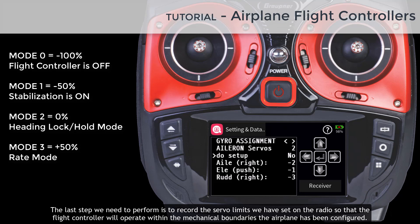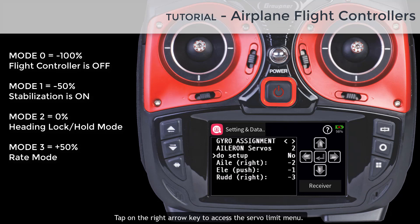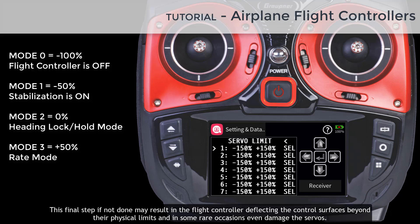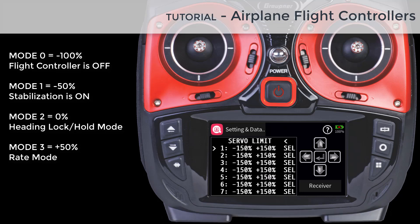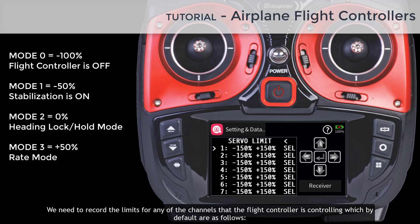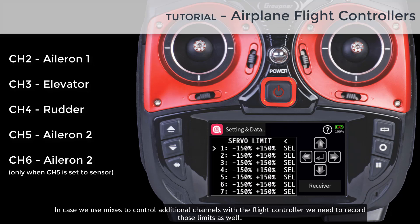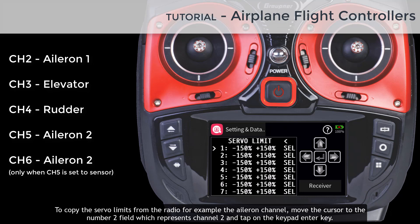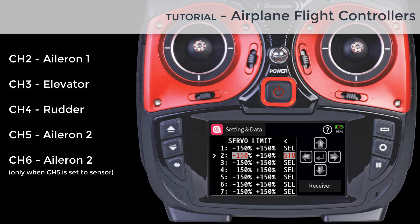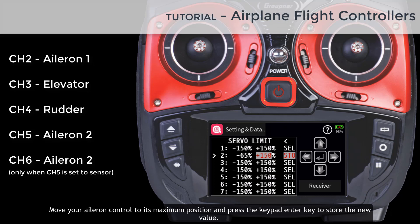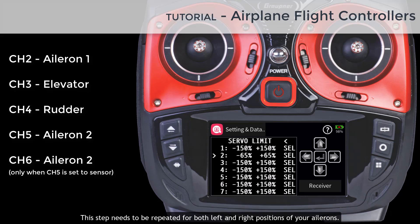The last step is to record the servo limits set on the radio so that the flight controller will operate within the mechanical boundaries of the airplane. Tap on the right arrow key to access the servo limit menu. If not done, this may result in the flight controller deflecting control surfaces beyond their physical limits, potentially damaging the servos. Record the limits for any channels the flight controller is controlling. To copy servo limits, move the cursor to the channel field, tap the keypad enter key, move the control to its maximum position, and press enter to store the value. Repeat for both left and right positions and for all control surfaces.